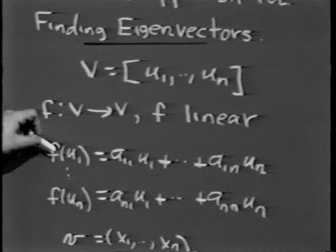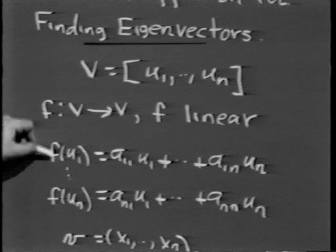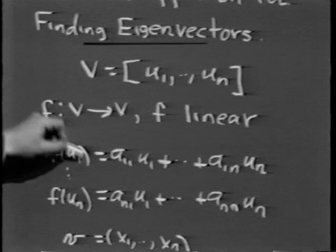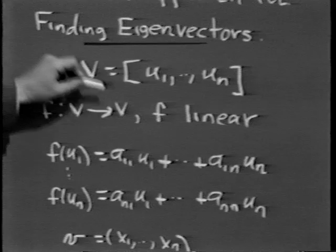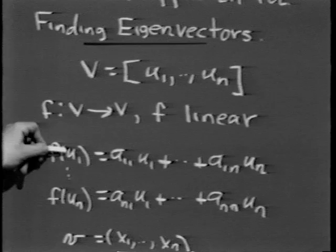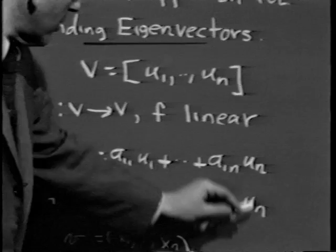Suppose V is an n-dimensional vector space and we've chosen a particular basis u₁ through uₙ to represent V. Suppose also that f is a linear mapping carrying V into V. We used the matrix approach: u₁ through uₙ are carried into f(u₁) through f(uₙ), and that determines the linear transformation f by linearity. Once you know what happens to the basis vectors, you know what happens to everything. Since we're expressing V in terms of the basis, f(u₁) through f(uₙ) can all be expressed as linear combinations of u₁ through uₙ.